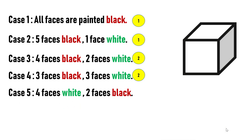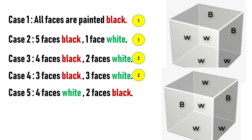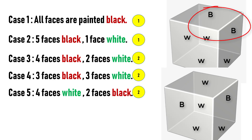In case five, let's assume two faces are painted black and four faces are painted white. This is similar to case three, so in this case there are two possibilities. The first is when the two black faces are on opposite faces, and the second is when the two black faces are on adjacent faces.